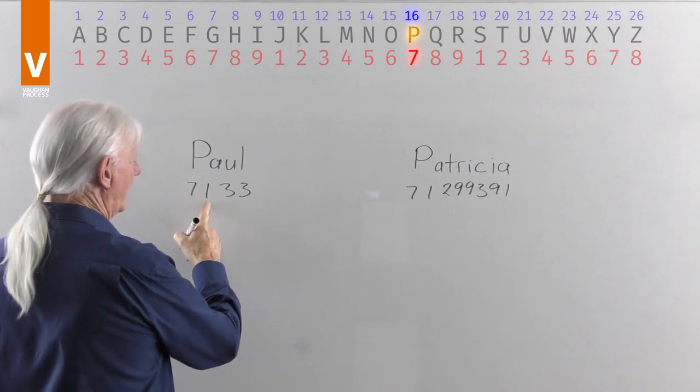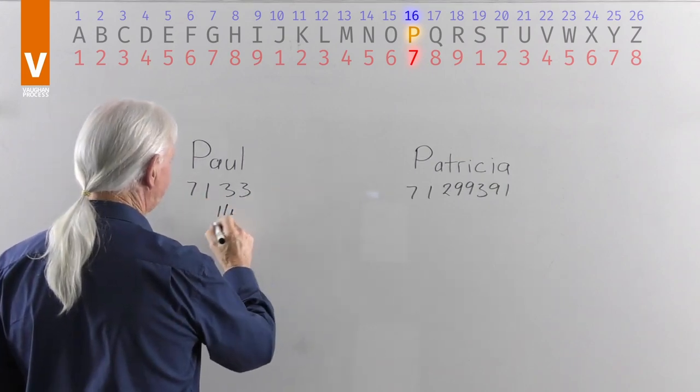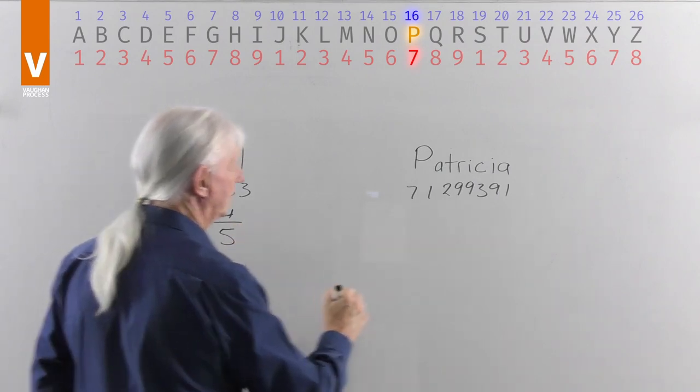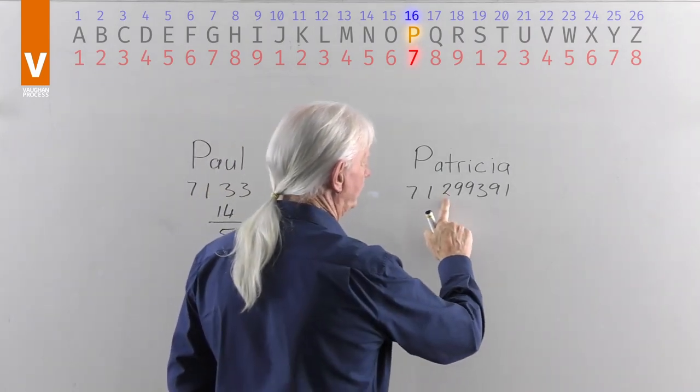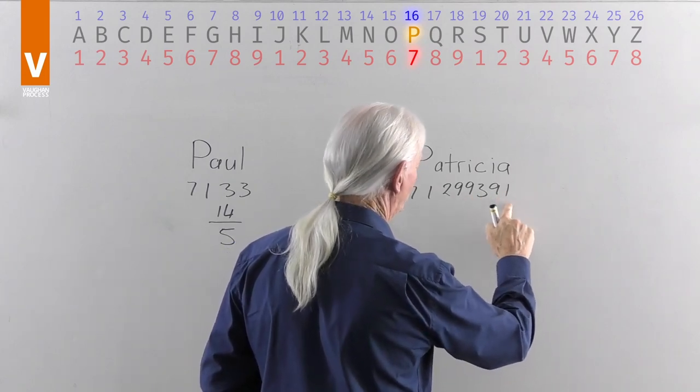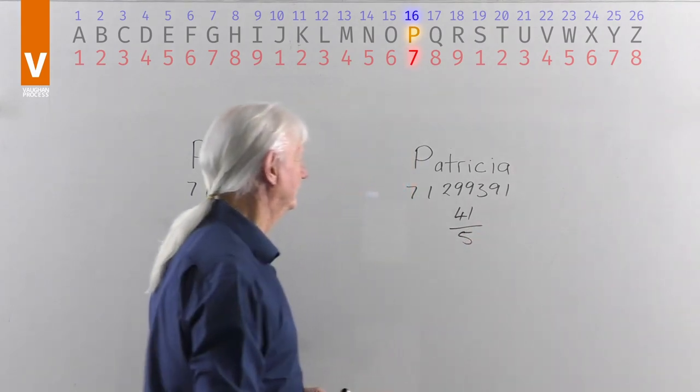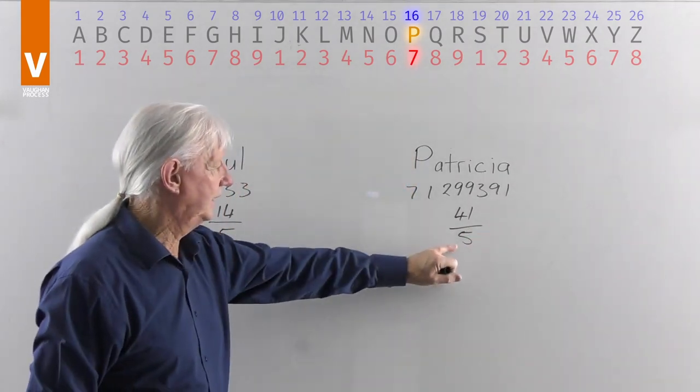Seven and one is eight. Eight and six is 14, which equals five. Seven, eight, ten, nineteen, twenty-eight, thirty-one, forty, forty-one. Now look at that. Five and a five.